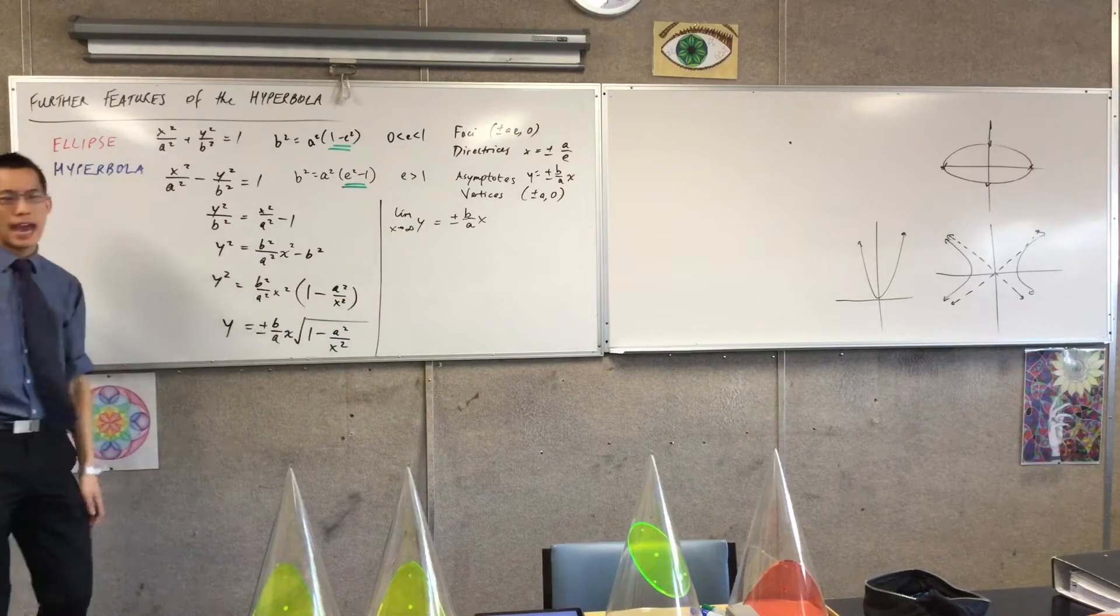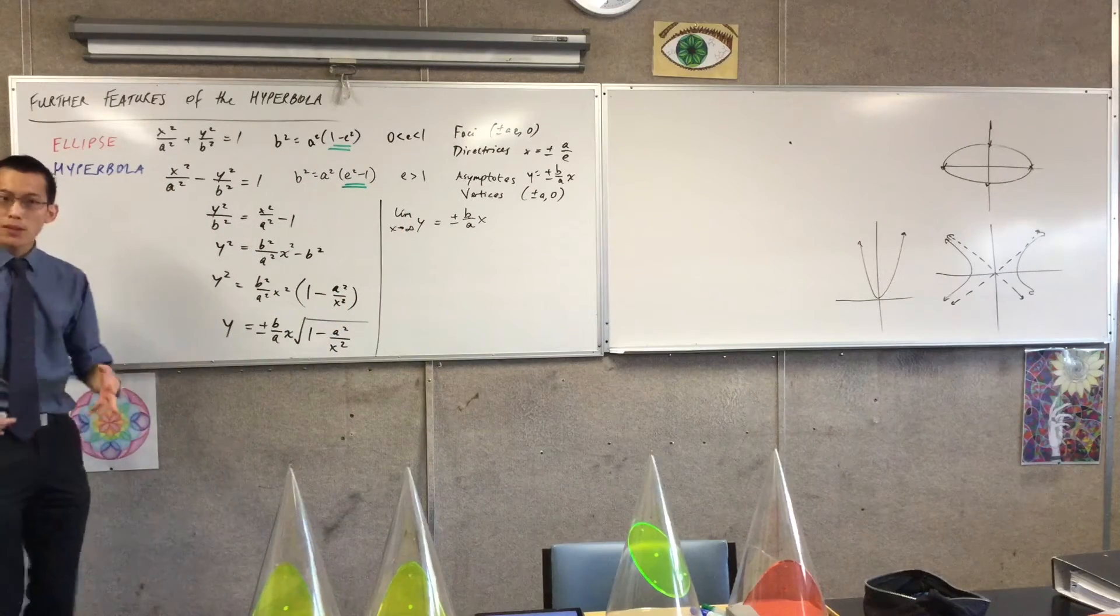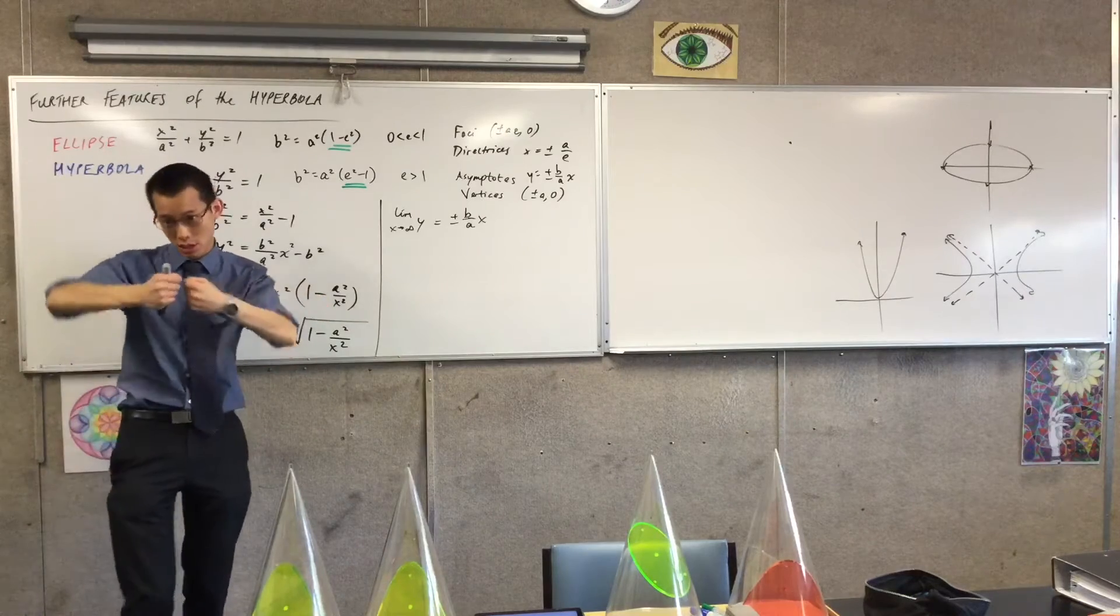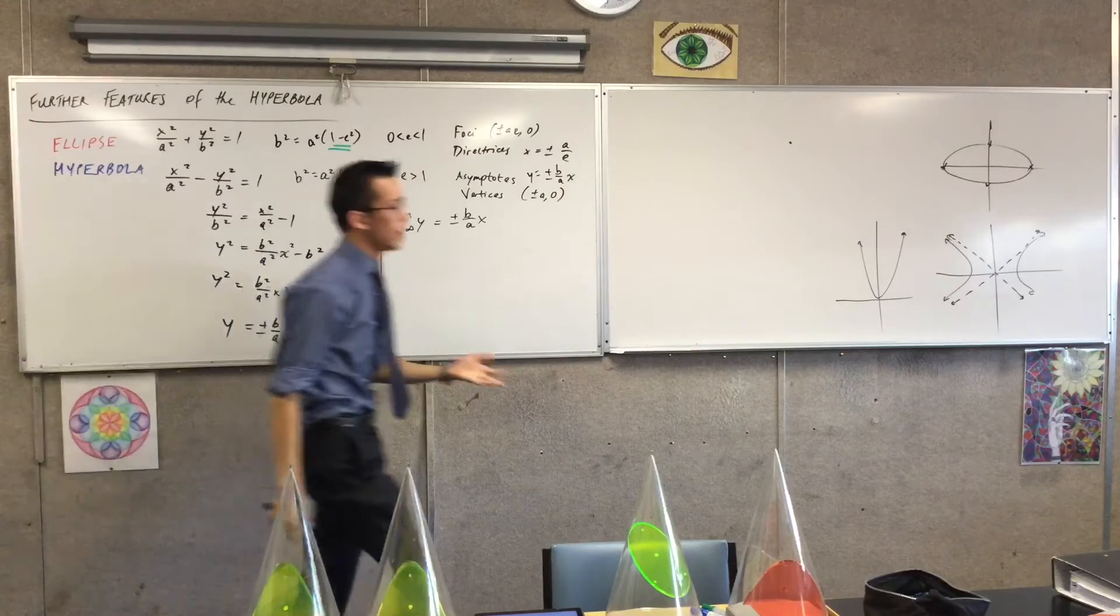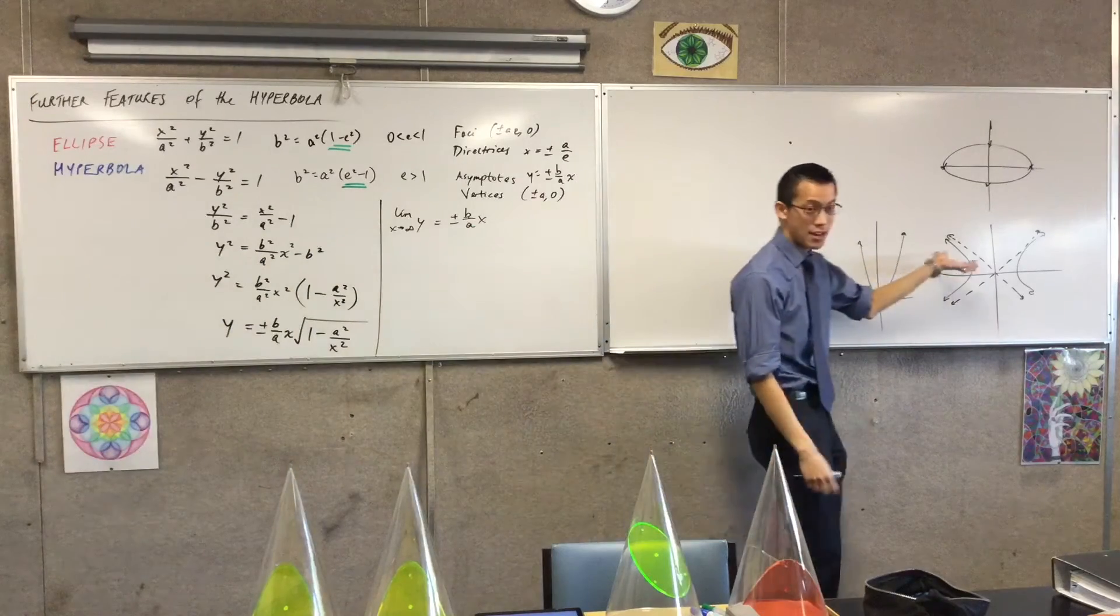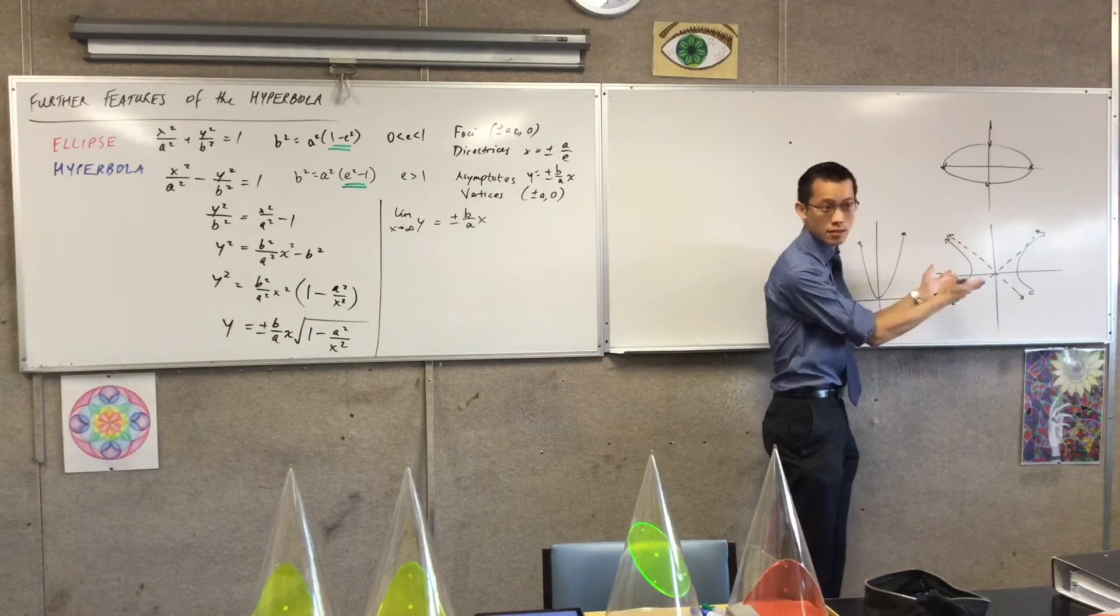If you change the A and the B, remember what they're changing is proportions. So they're stretching or squashing. But all they're going to do is give us fatter or thinner or bigger versions of this.